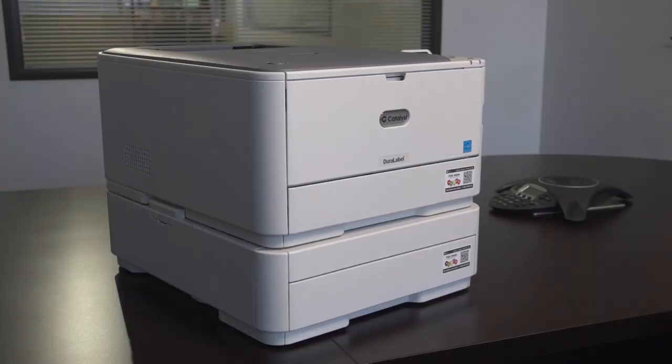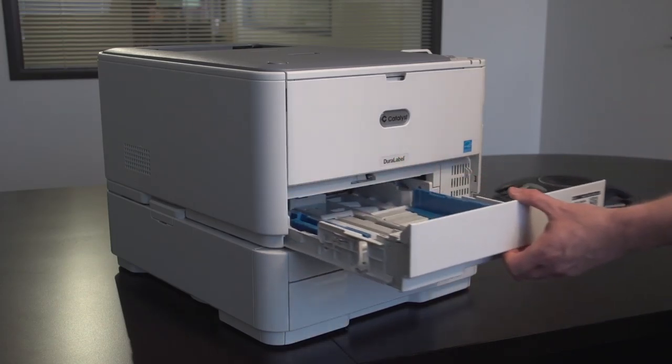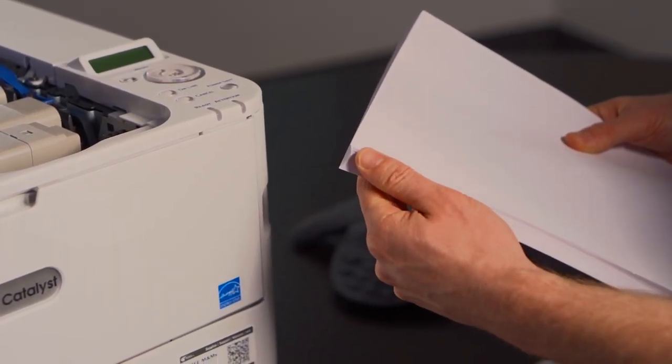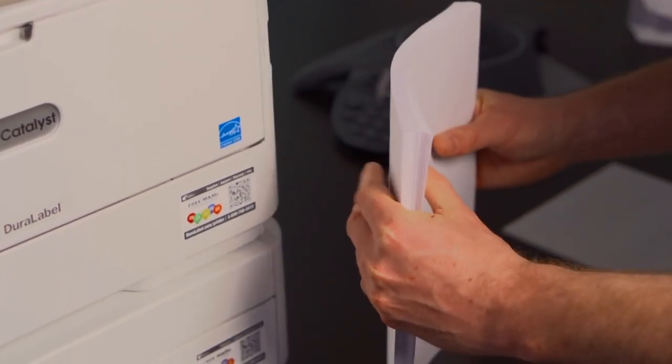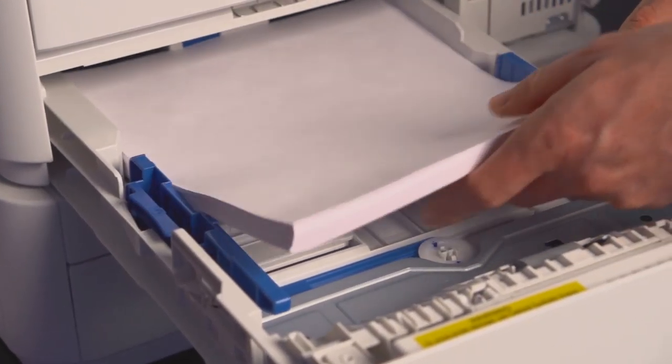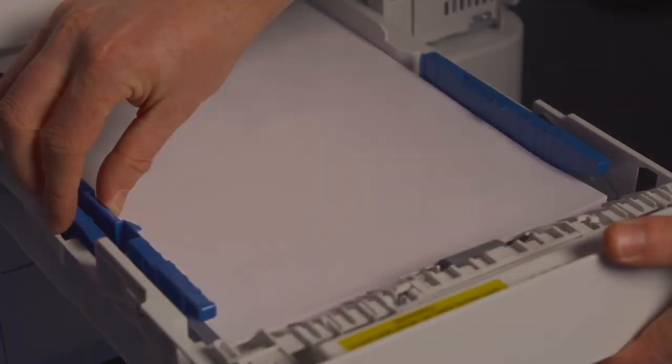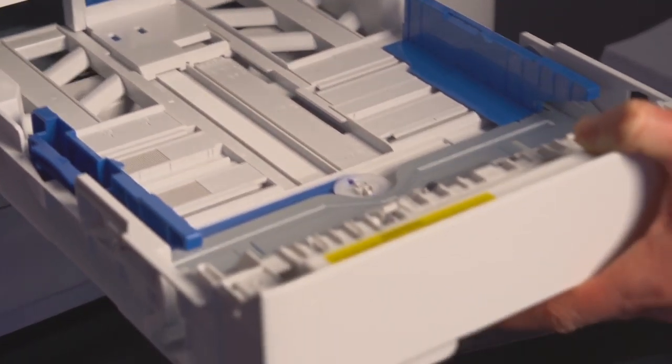To load paper into the standard tray, pull the tray out by its handle to the open position. Fan your stack of supply to separate the sheets from one another. If necessary, gently tap the edges of the stack on a flat surface. Load your supply face down with the top edge towards the front of the printer and adjust the rear stopper and paper guides to fit snug against the supply.